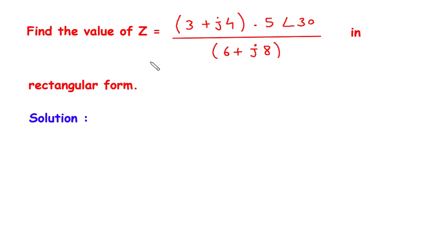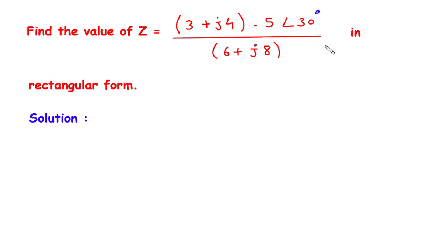If you find this video helpful, then feel free to donate whatever amount you can — link is in the description below. Find the value of Z equal to (3 + j4) × (5 ∠ 30°) / (6 + j8) in rectangular form.